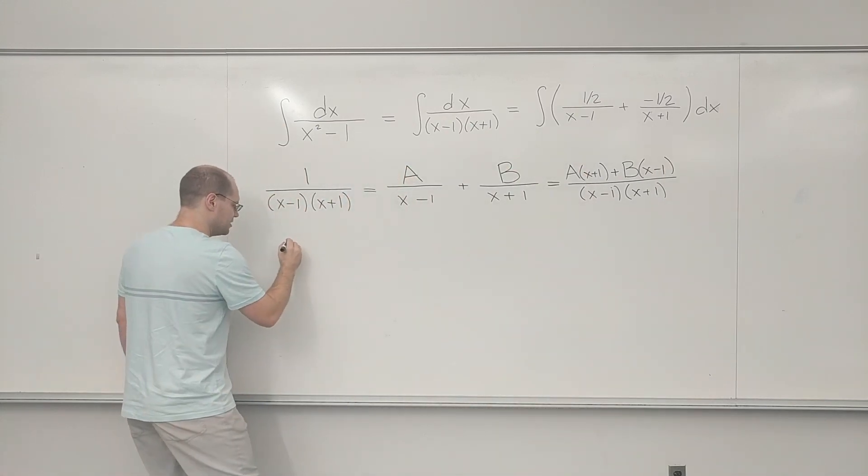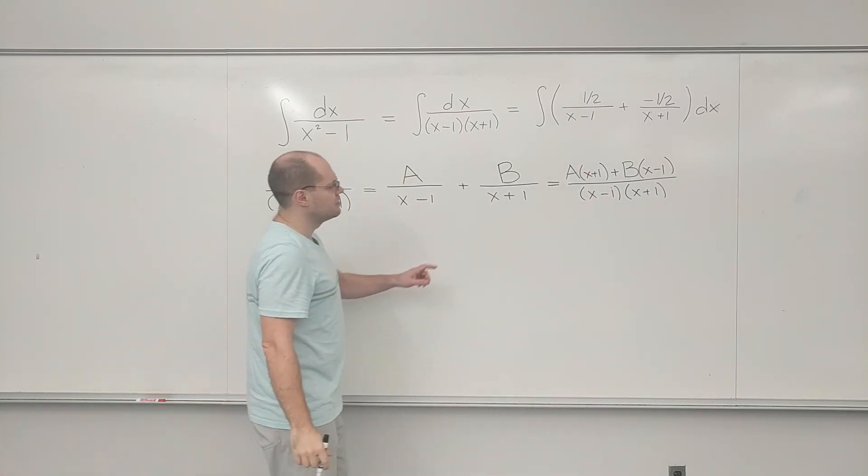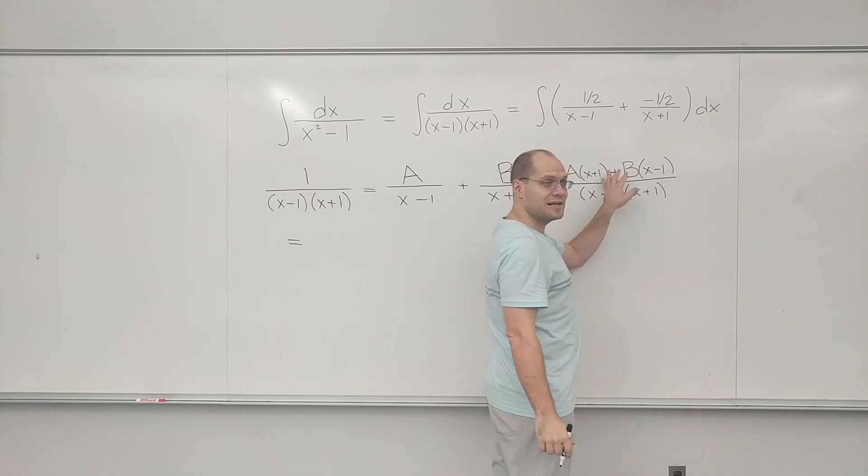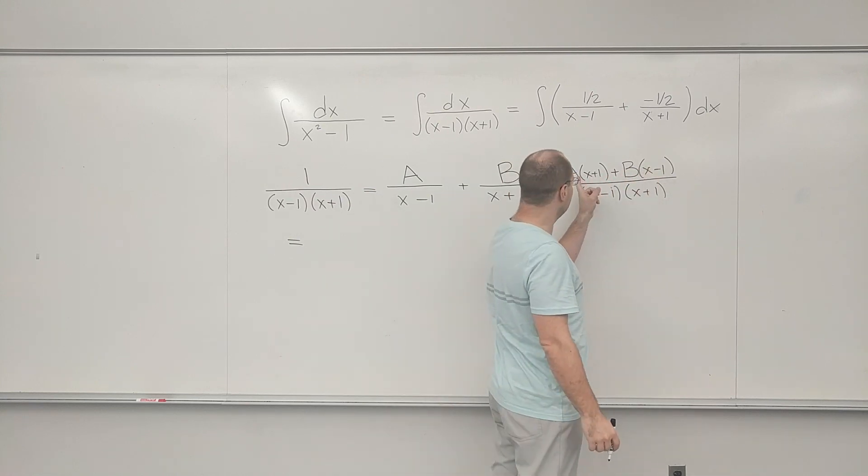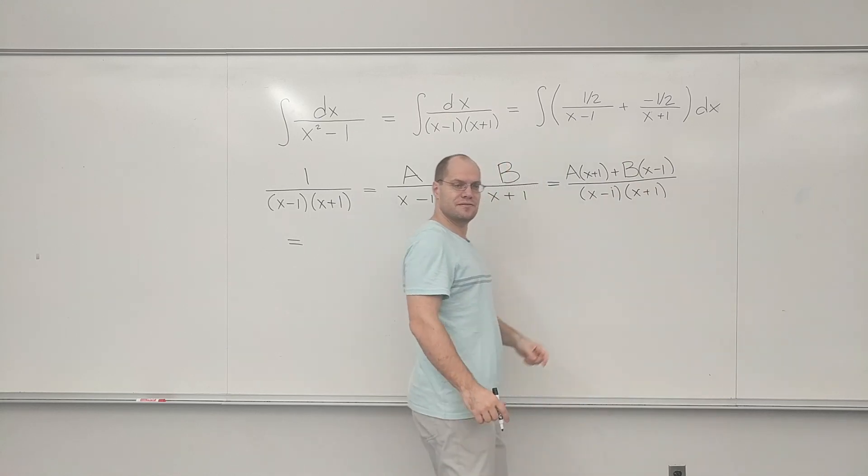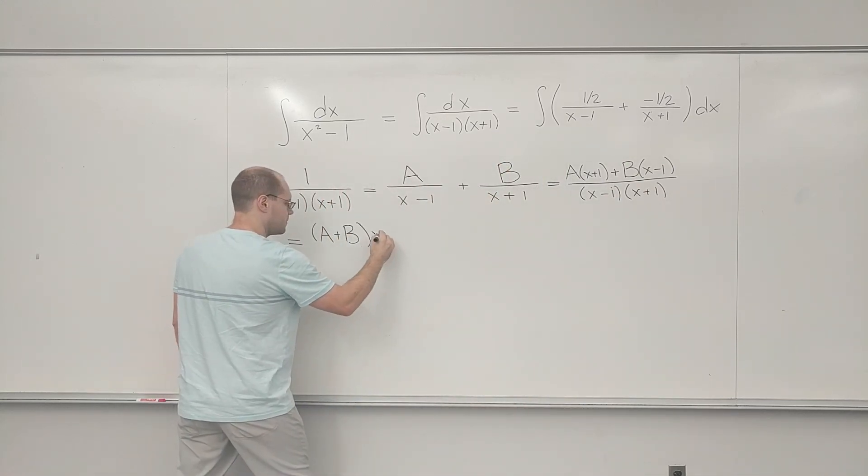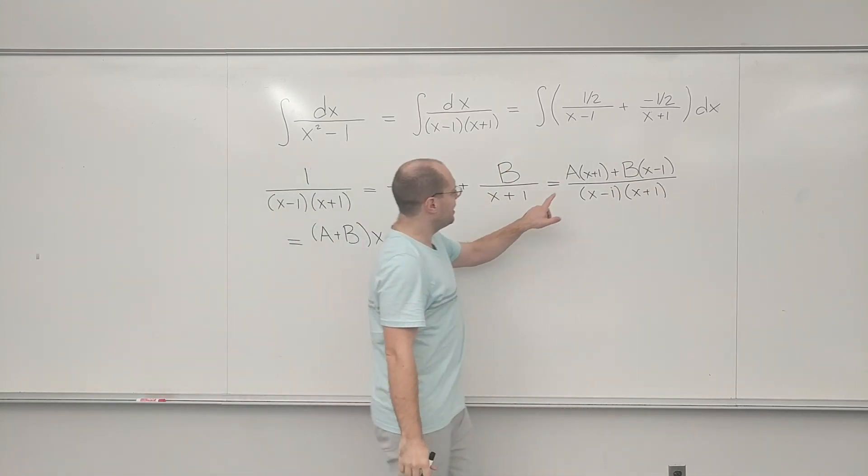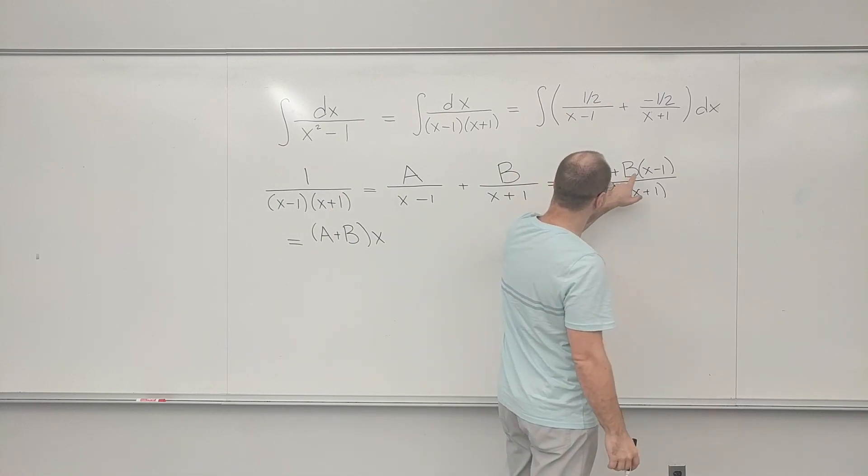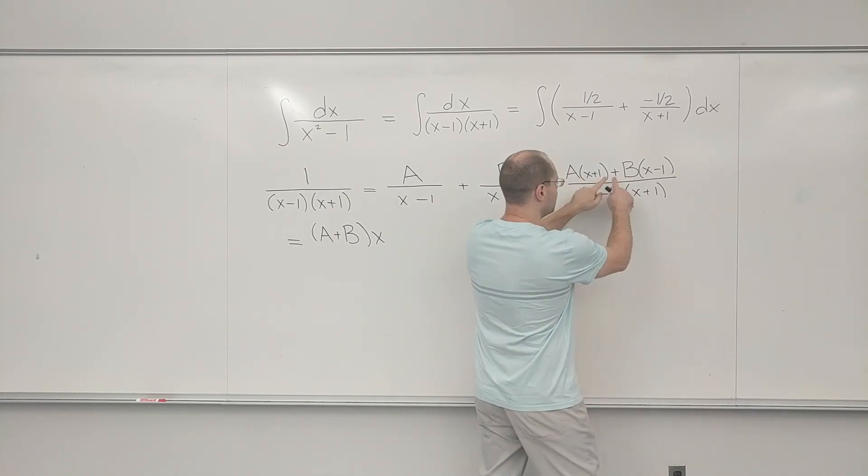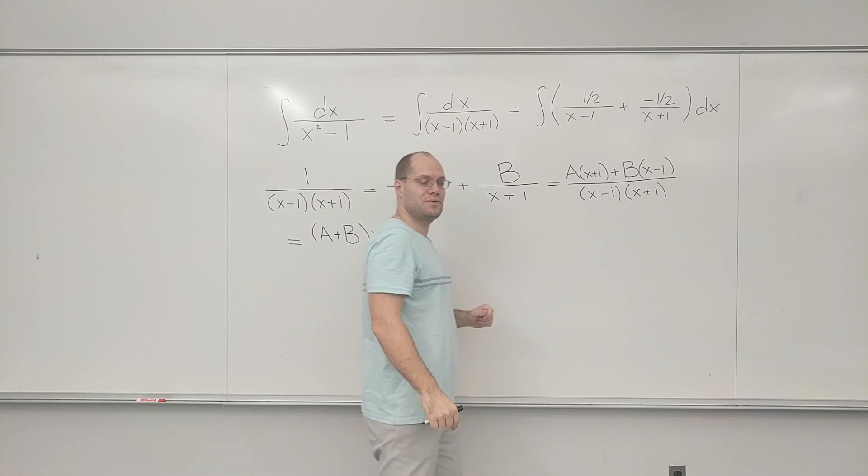Let's continue with simplifying this. I will multiply this out and combine the like terms in one step. It'll be a plus b times x. So that's the linear term.